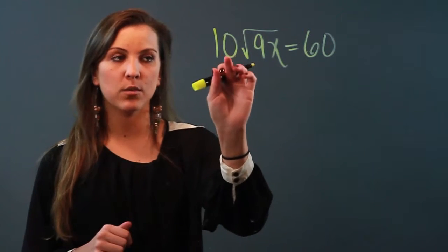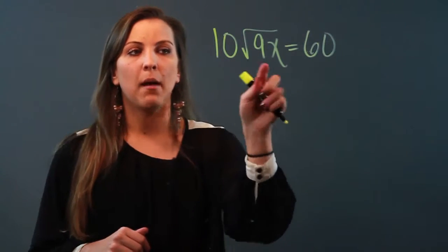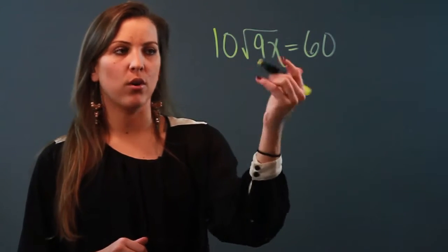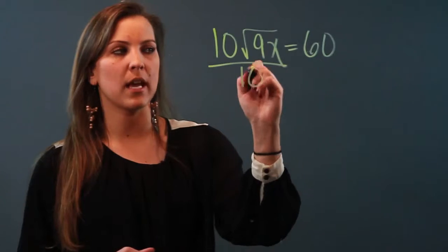So right now I've got that 10 that's outside of the square root sign, I want to get rid of it and because it's being multiplied by the radical, the way to get rid of it is to do the inverse operation which is divide.